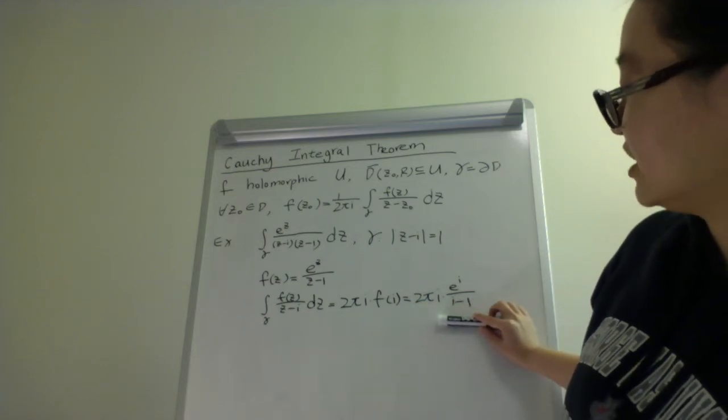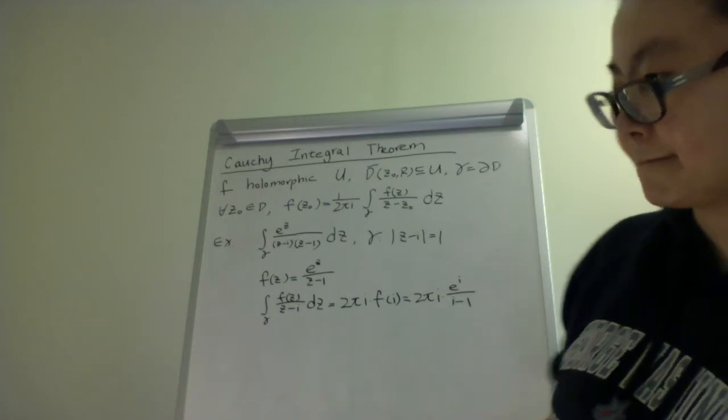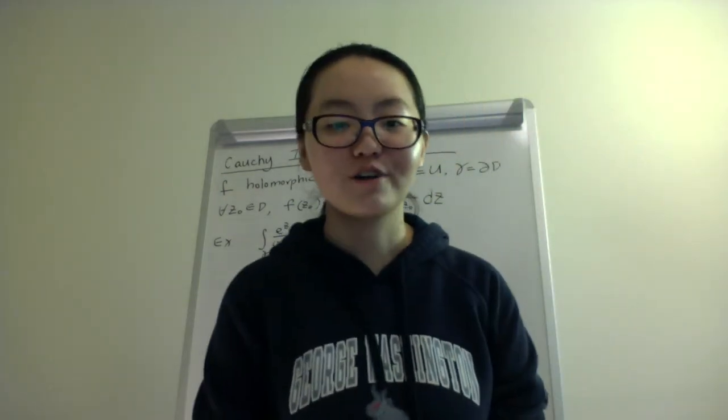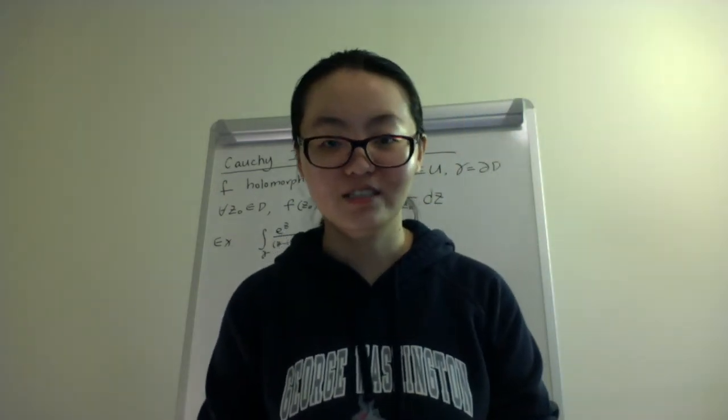2 pi i times e to the i over i minus 1. Why am I a good match for Courant Institute? I would like to suggest three reasons.